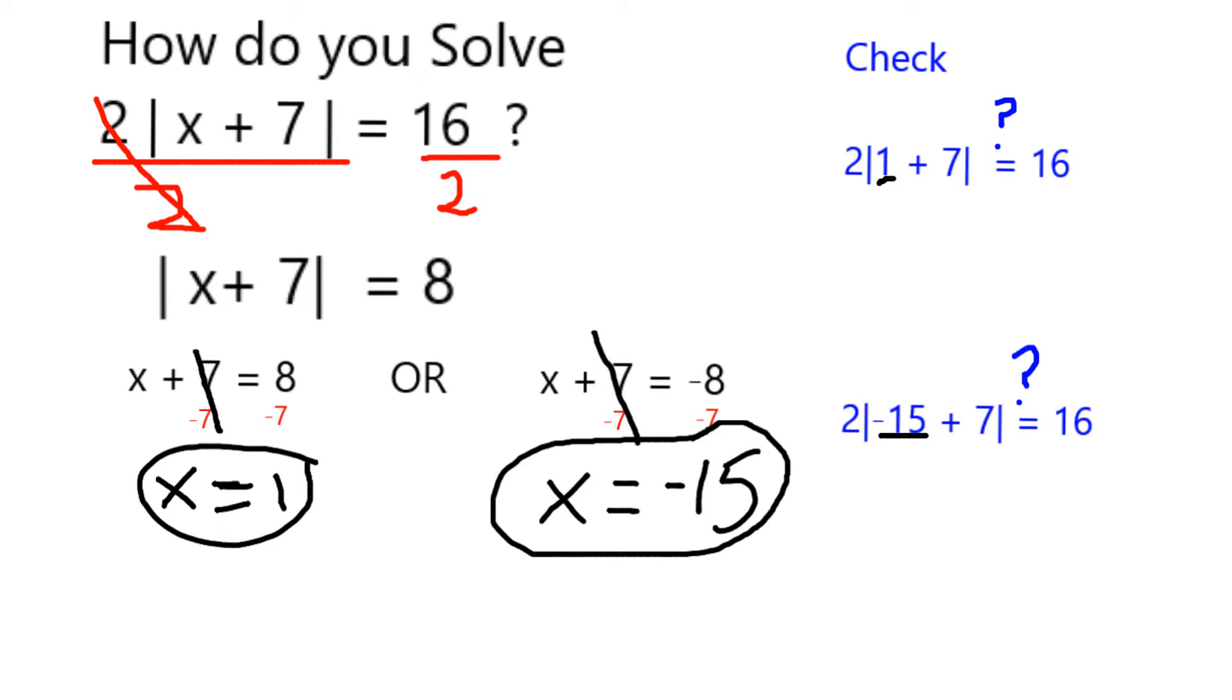A quick check can verify that each of these work. When I plug in 1, I get 8 inside the absolute value. And of course, 2 times 8 is going to be equal to 16.